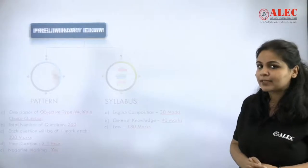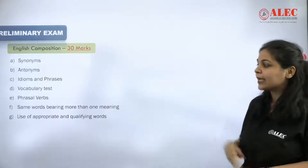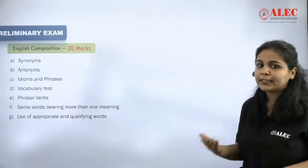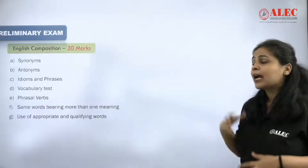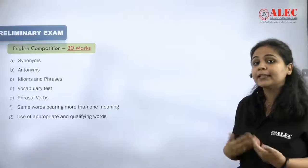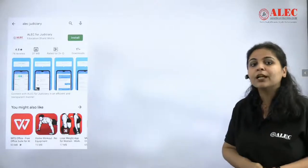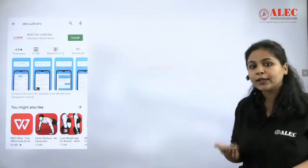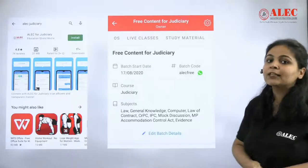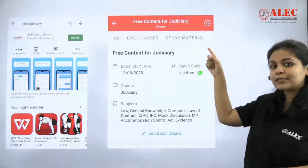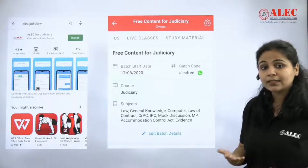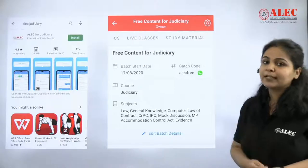Let's go to English, which is 30 marks. This is 10th level grammar. You will get questions like synonyms, antonyms, vocabulary, idioms, phrases, one-word substitution, etc. To prepare, you can read 10th level grammar or download our app — Elect for Judiciary — available for Android users. You can log in, add a free content batch for Judiciary, where we have study material covering vocabulary, phrases, and more. This syllabus PDF will also be available in our free content batch.